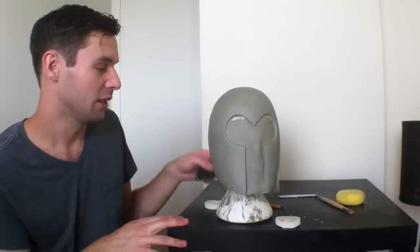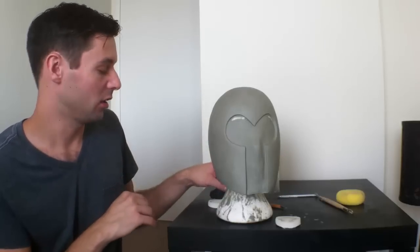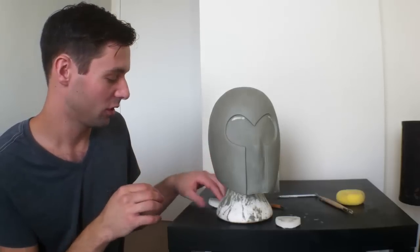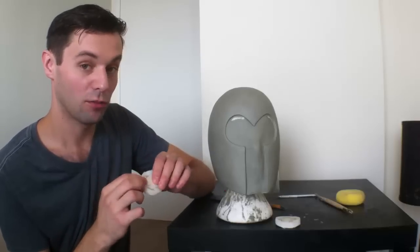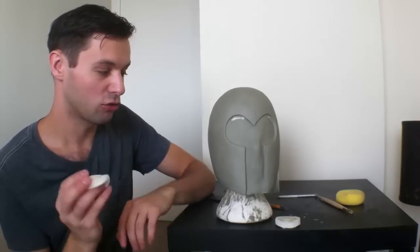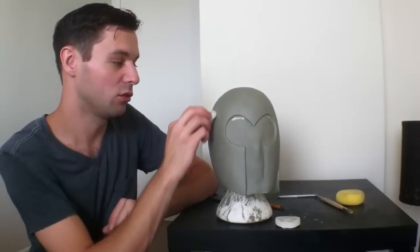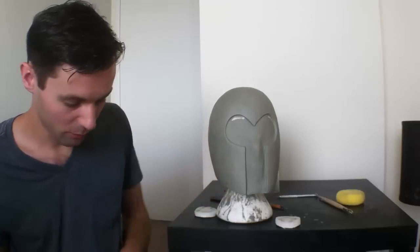After I used the rubber kidney to smooth out any big imperfections, I just used these. These are just makeup sponges that I got from the dollar store. Sponges are a great way to smooth off any clay really, and leave a nice smooth finish to it.